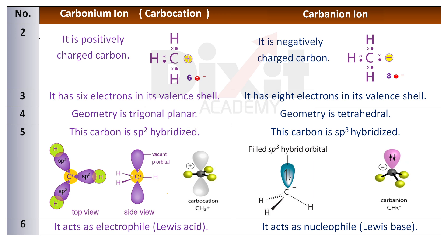Point number 4: The geometry of a carbonium ion is trigonal planar, whereas the geometry of a carbanion is tetrahedral. Point number 5: In a carbonium ion, the carbon atom is sp2 hybridized, whereas in a carbanion, the carbon atom is sp3 hybridized.